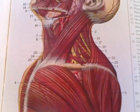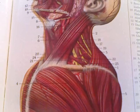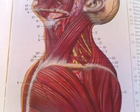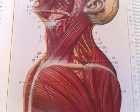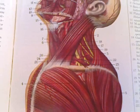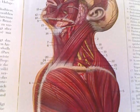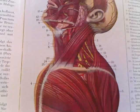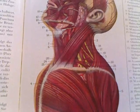Number six is the infrahyoid muscle. Number nine is the base of the mandible. Then number twelve is the masseter muscle. Number thirteen is the ductus parotidus.